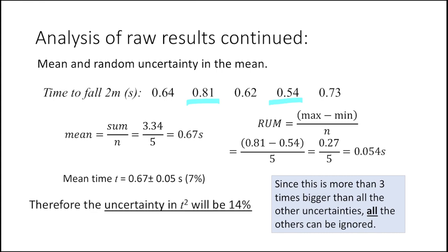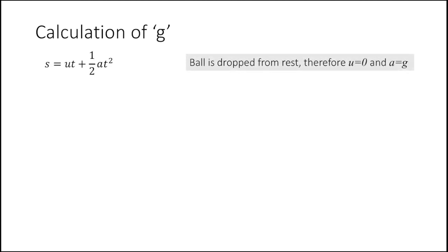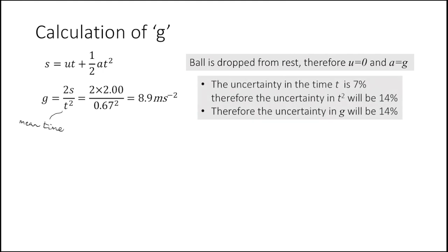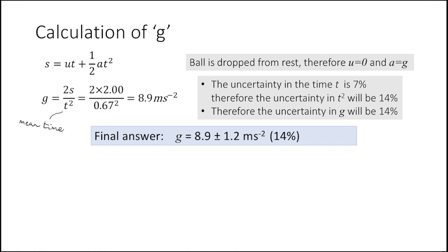Because it's T squared in our relationship for acceleration due to gravity, we have to double the 7%, making it a 14% uncertainty in our calculation of g. With u = 0 and rearranging s = ½gt², g = 2s/t². With s = 2 metres and mean time = 0.67 seconds, we get a calculated value of g = 8.9 m/s², with an uncertainty of 14%, because the dominant uncertainty is the 7% in time, doubled to 14% due to T squared.